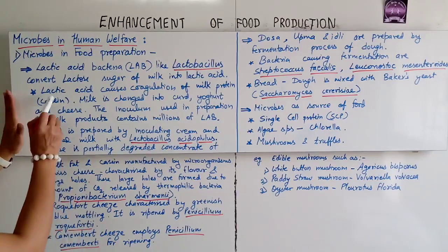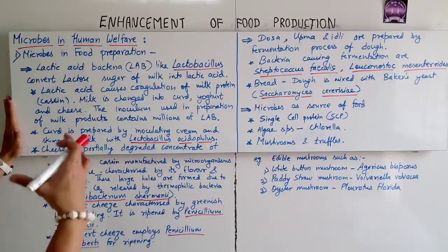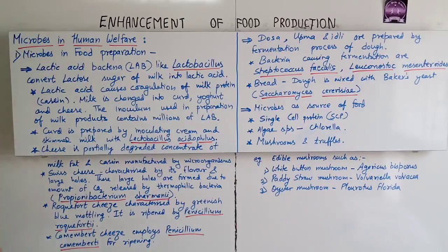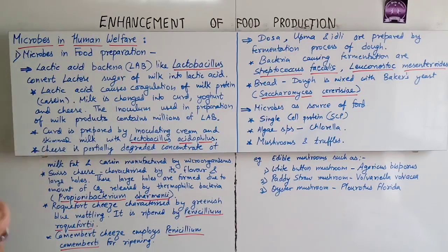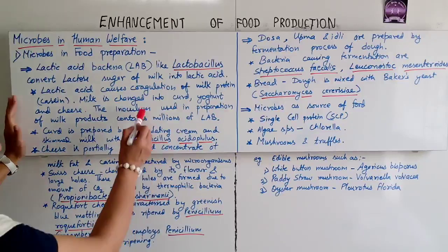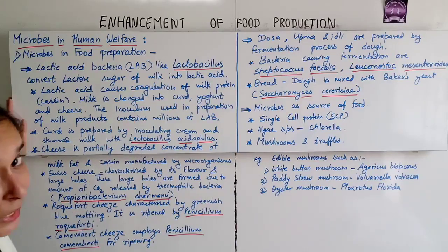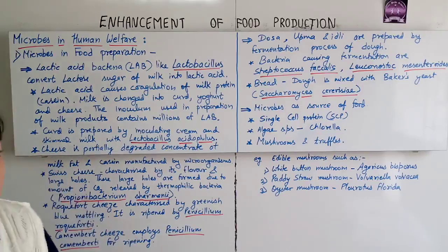This lactic acid causes coagulation of the milk protein casein, and milk is changed into curd, yogurt, and cheese. The inoculum used in preparation of milk products contains millions of lactic acid bacteria.